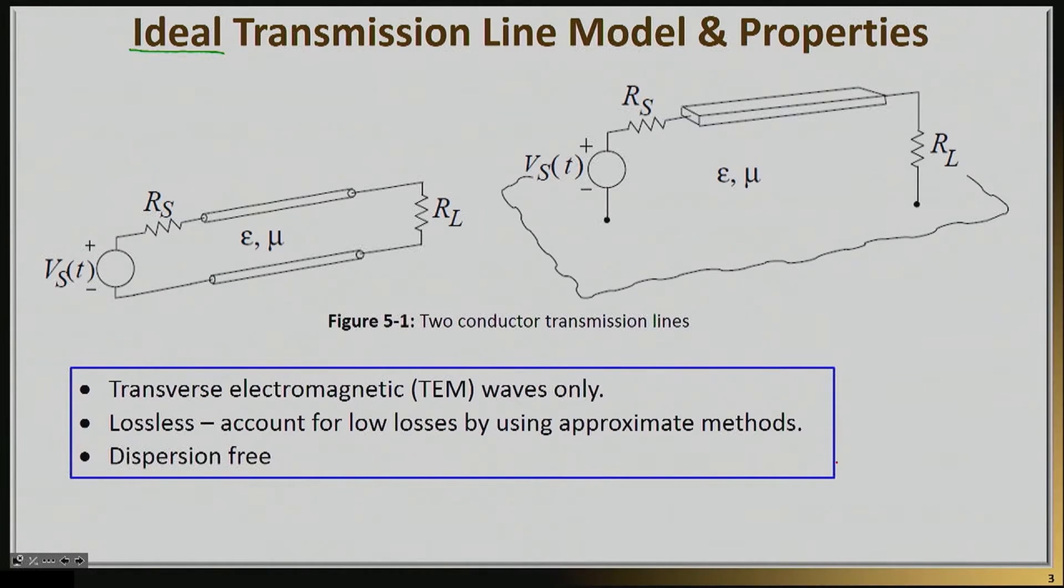So the first really critical property is that an ideal transmission line only propagates a TEM wave, or a transverse electromagnetic wave.